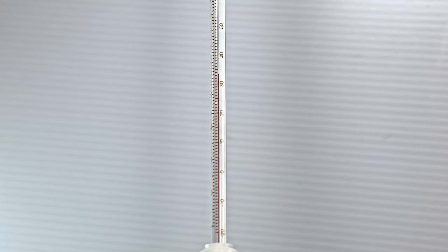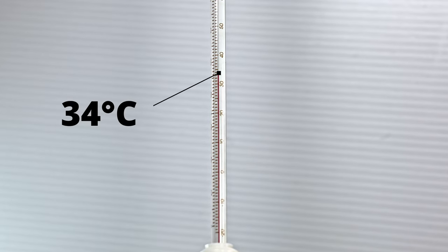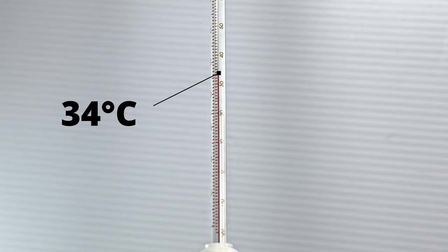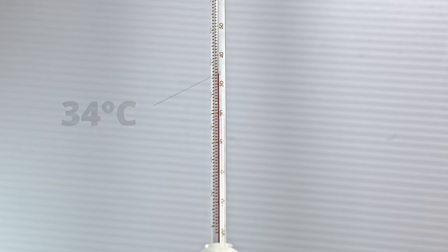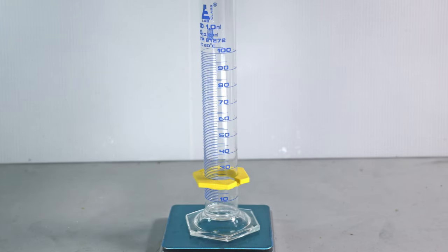Also you can see that our distillate is boiling at 34 degrees. This indicates we're boiling pure isopropyl chloride. Now we're going to weigh out our distillate.